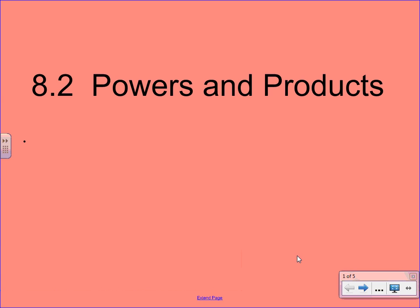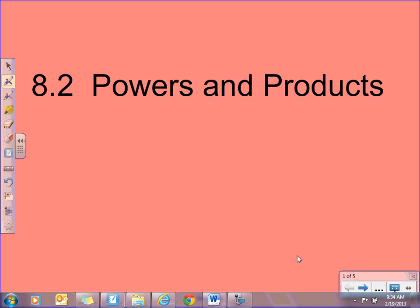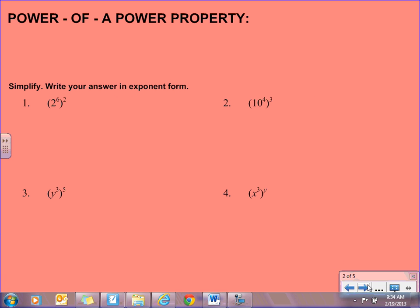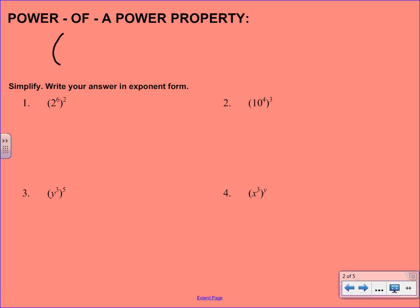Welcome to your next lesson on exponents. It'll cover section 8.2, which is powers and products. We're going to start right away with the power of a power property. What this means is if you have a power like x to the m and you're raising it to another power n, you multiply the exponents to get x to the m times n. The key phrase here to write down is multiply the exponent.